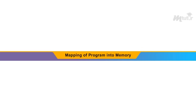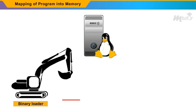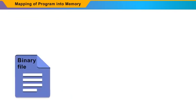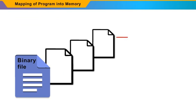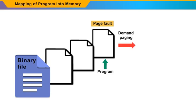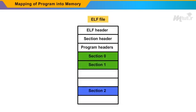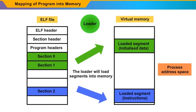Mapping of program into memory. In Linux, the binary loader does not load a complete binary file into physical memory. Instead, the pages of the binary file are mapped into the regions of virtual memory. When the program tries to access a page and if there is a page fault, only then it uses demand paging to load that page into physical memory. Linux generally uses the ELF format loader. An ELF format binary file consists of a header that is trailed by page-aligned sections.